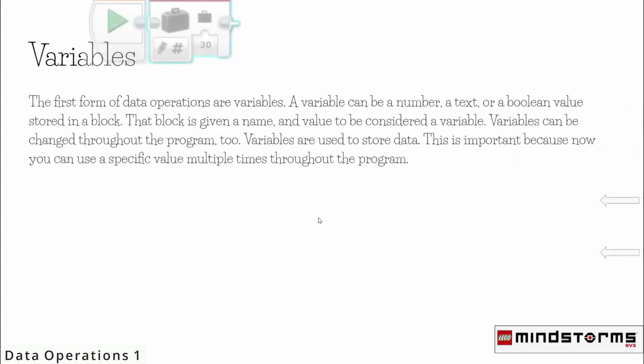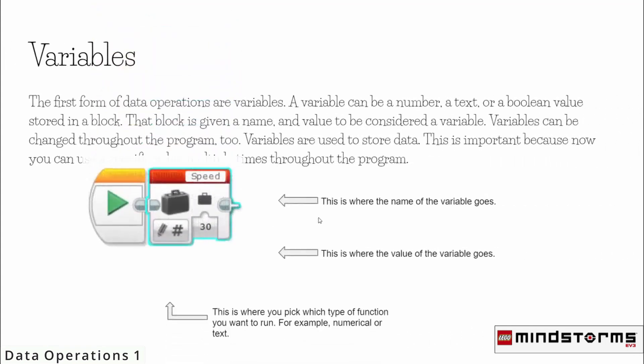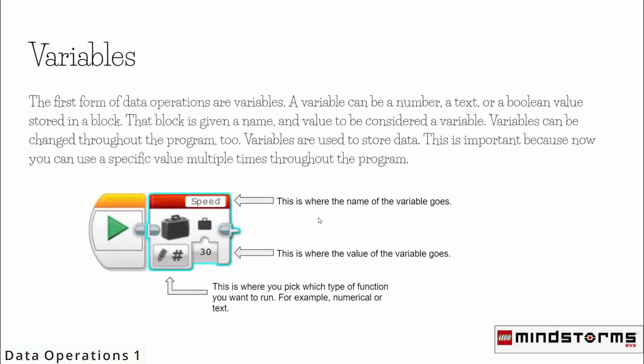The first form of data operations are variables. A variable can be a number, a text, or a boolean value stored in a block. That block is given a name and a value to be considered a variable. Variables can be changed throughout the program too. Variables are used to store data, which is important because you can use a specific value multiple times throughout the program.